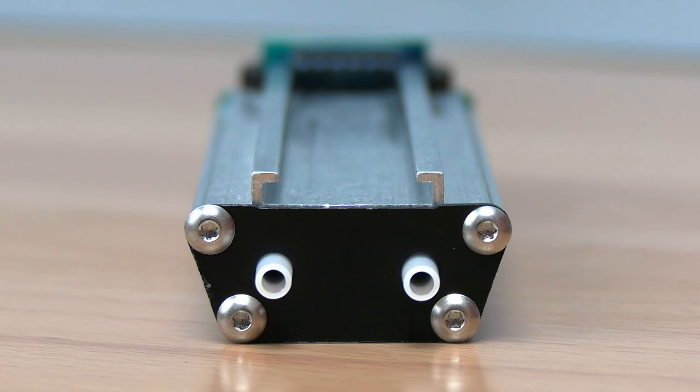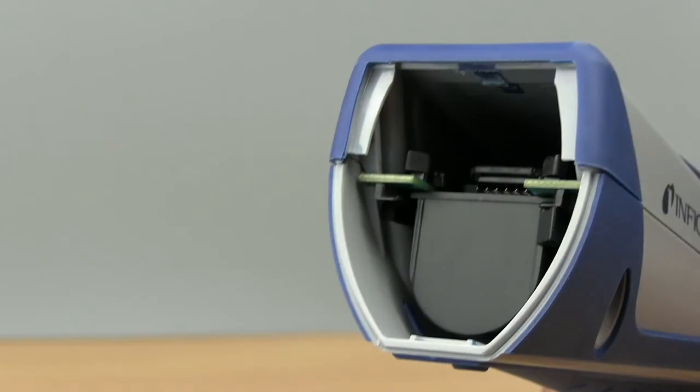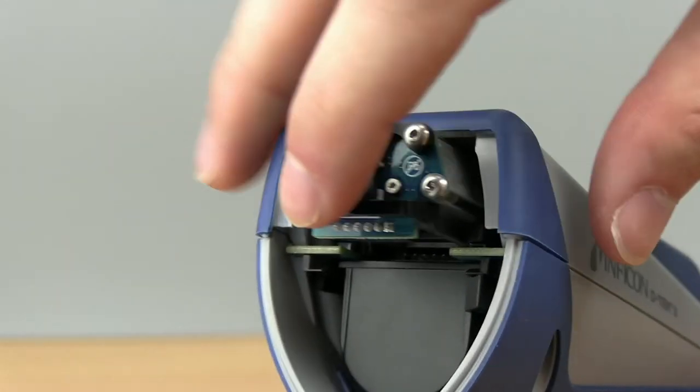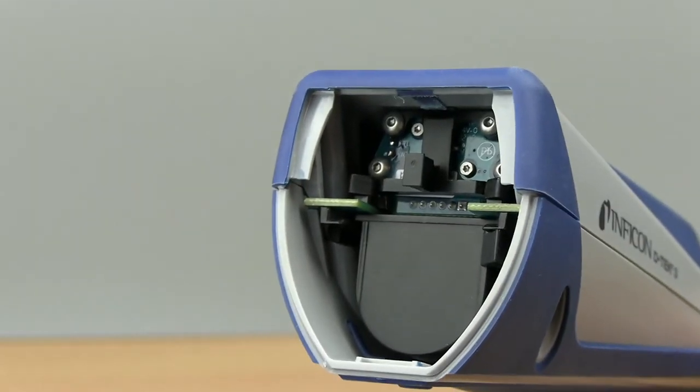To install the new sensor, line the sensor up with the rails and gently push the sensor into place. It should slide easily, so don't force it.